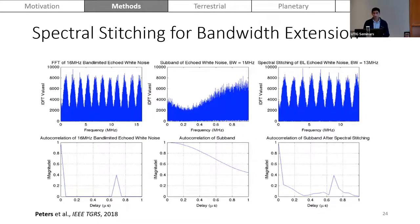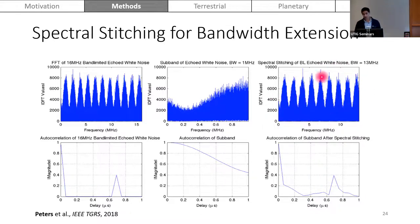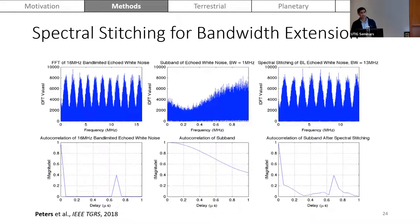Another technique is spectral stitching. With the full band-limited echoed white noise source, you can clearly resolve the echo peak. If you only consider a subband of the received echo, you wouldn't be able to resolve the peak because your bandwidth is insufficient. But because we're receiving white noise, you can step independently through your center frequency — very similar to step frequency radar — to extract an echo peak. This echo peak is important for observing the relative power as well as ranging profiles, which map to an ice thickness measurement.